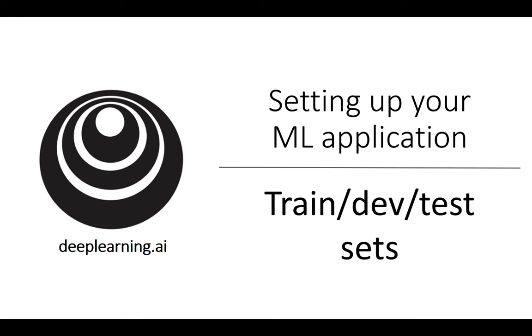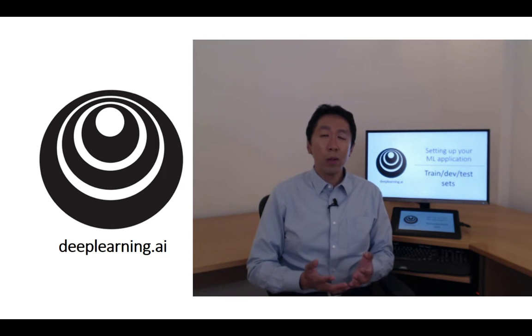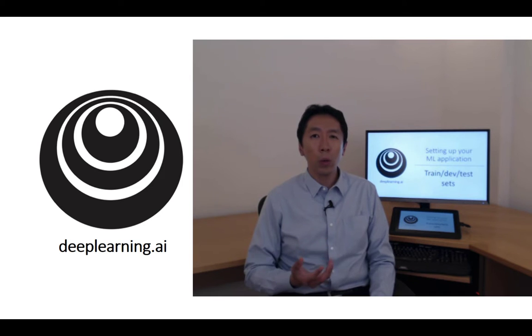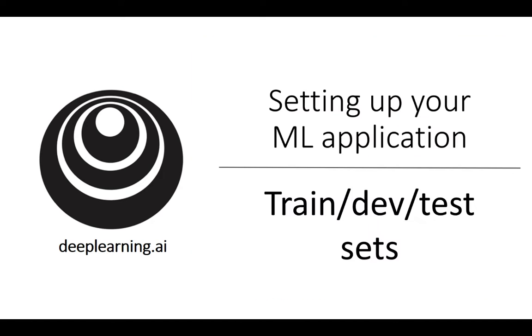Welcome to this course on the practical aspects of deep learning. Perhaps now you've learned how to implement a neural network. In this week, you'll learn the practical aspects of how to make your neural network work well, ranging from things like hyperparameter tuning, to how to set up your data, to how to make sure your optimization algorithm runs quickly so that you get your learning algorithm to learn in a reasonable amount of time.